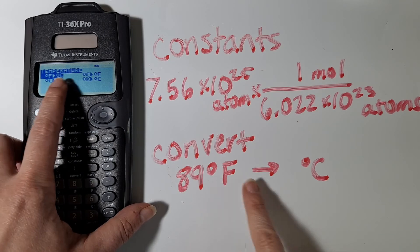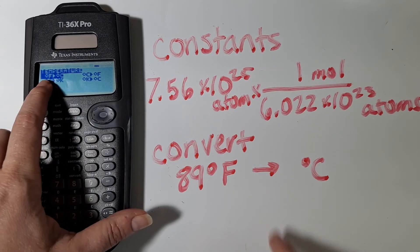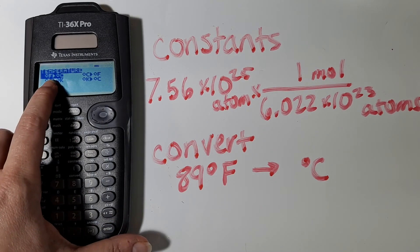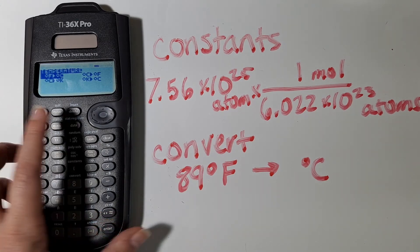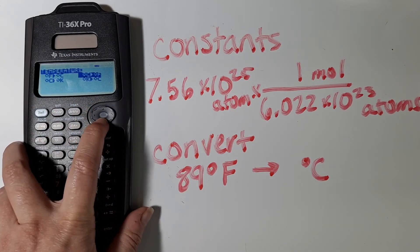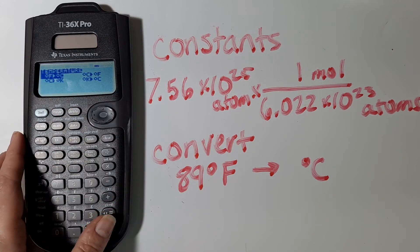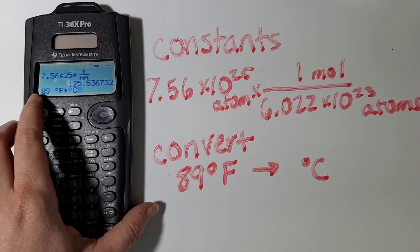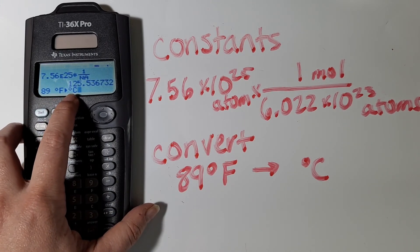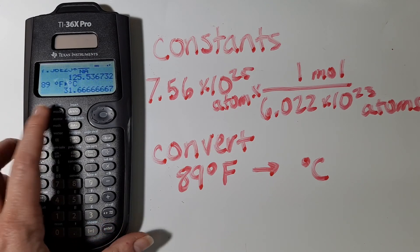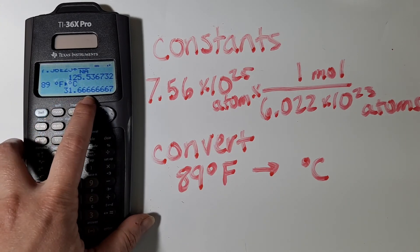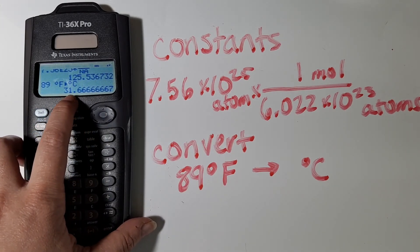So I'm starting in Fahrenheit, and I want to get to Celsius, and so I'm going to choose this one that's already selected by default. But if I wanted one of the other ones, I could scroll over. So make sure the one that you want is highlighted, and then you can hit Enter, and then it will tell you what the temperature is in that other unit.